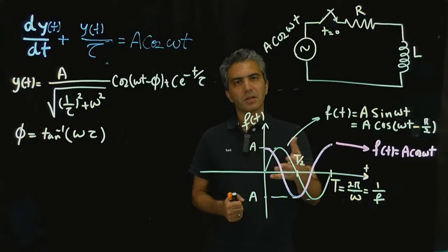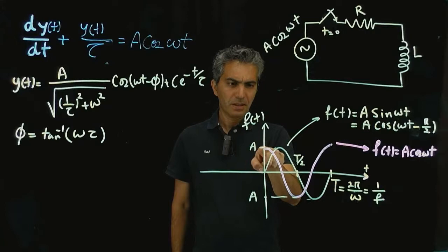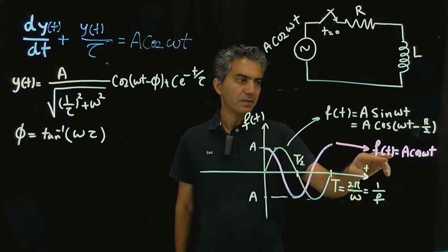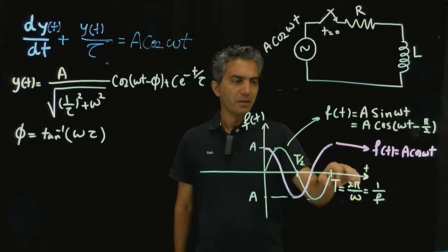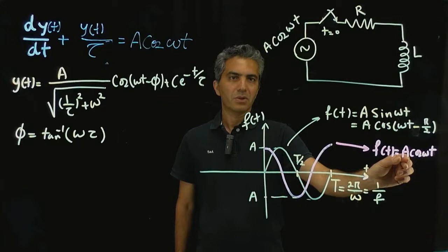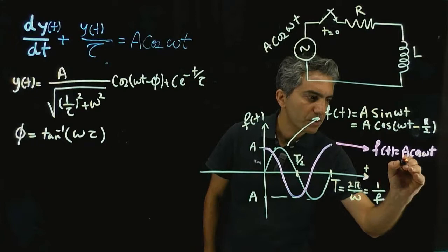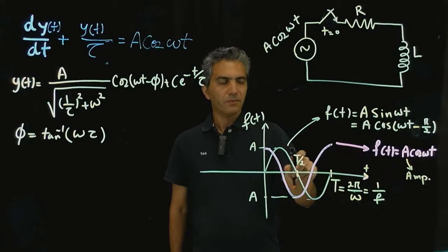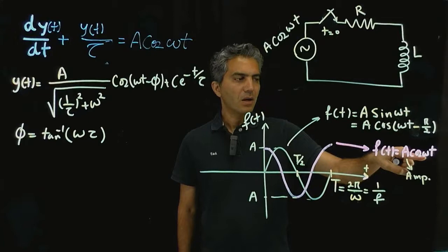Here, this pink line is a cosine function of time. The x-axis is the time axis, the y-axis is the value of the function, and the function is written in the form of a constant — most of the time called the amplitude. So this is the amplitude of the signal, and then cosine of omega times time, with the whole argument in parentheses.